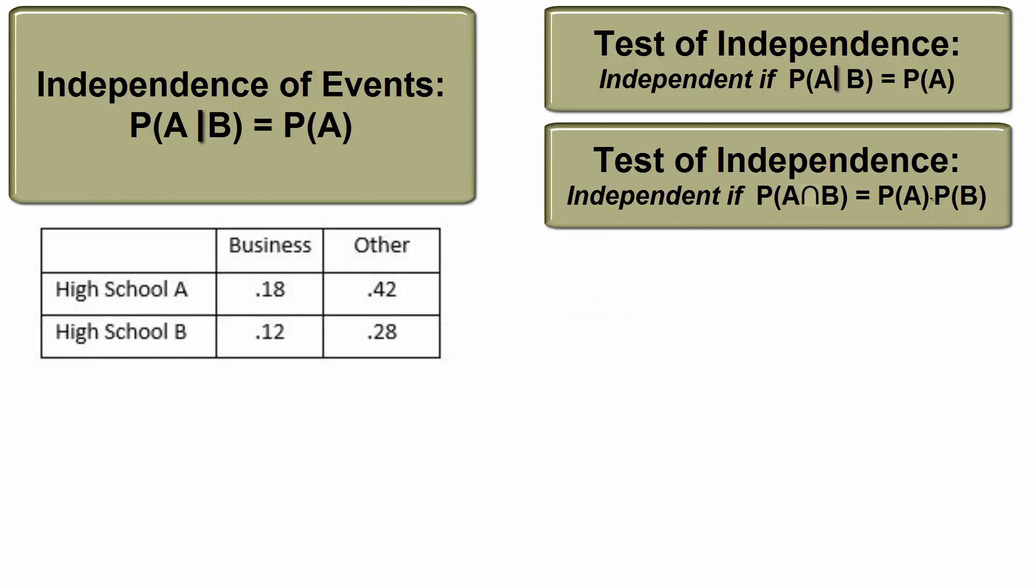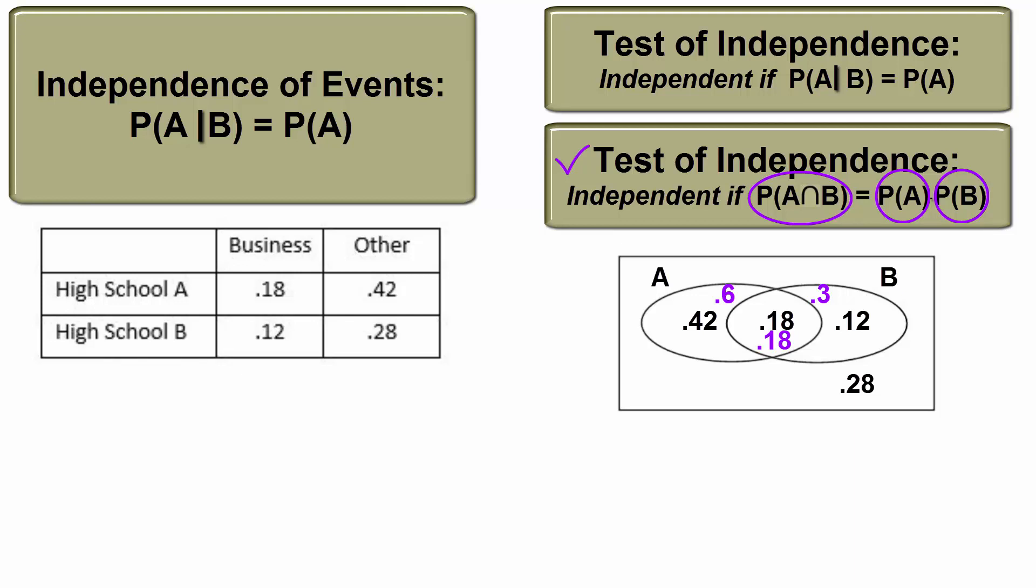Let's convert the information from this table to a Venn diagram. Our two sets are high school A and business. Note that 0.28 is the probability of being outside of both, the probability of being in high school B and declaring a major other than business. Suppose we had not seen the data before. Using the second test of independence, we can confirm that multiplying the probability of A times the probability of B does yield the probability of the intersection. Thus, independence is confirmed.